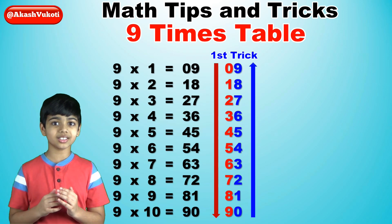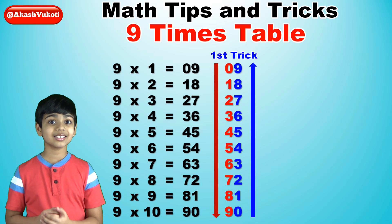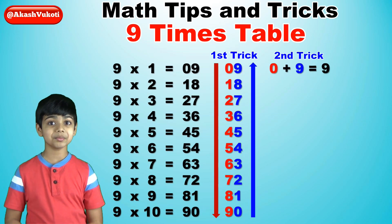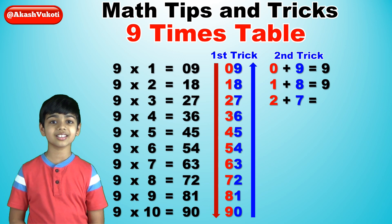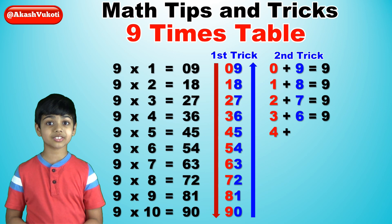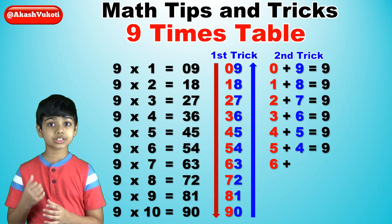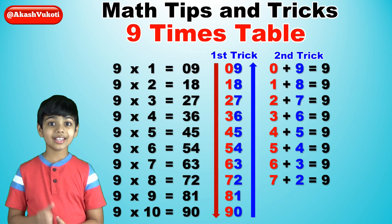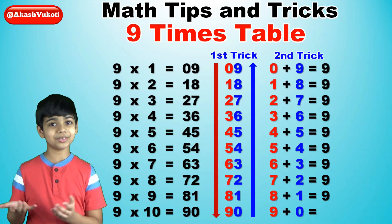The second trick is that the sum of the digits of each answer is 9. So as you can see here: 0 plus 9 is 9, 1 plus 8 is 9, 2 plus 7 is 9, 3 plus 6 is 9, 4 plus 5 is 9, 5 plus 4 is 9, 6 plus 3 is 9, 7 plus 2 is 9, 8 plus 1 is 9, and finally 9 plus 0 is 9.